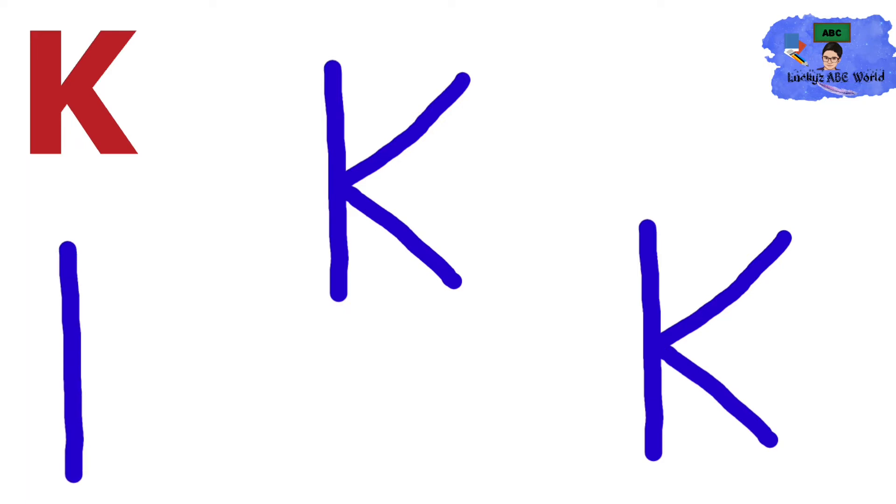How to draw capital letter K? First, we draw a slanting line. Then draw two slanting lines to the right side. Draw the first slanting line from top to middle. Then another slanting line from middle to bottom. This is capital letter K.